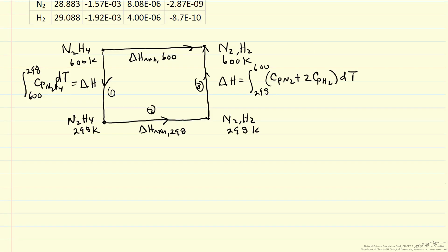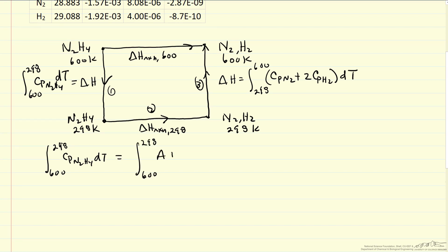So let's look at just one of these terms. Let's look at this integral from 600 to 298 for hydrazine. And so that's going to be the integral a plus b times t plus c times t squared plus d times t cubed. When you integrate that, that gives us a times t, b over two t squared, c over three t cubed, d over four t to the fourth, all of this evaluated between these two limits.